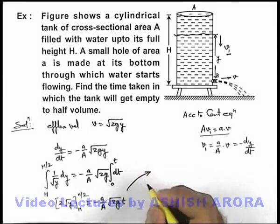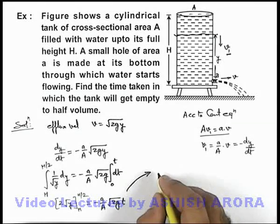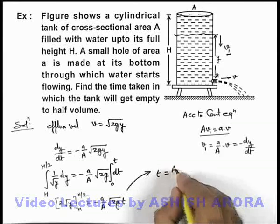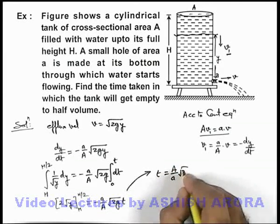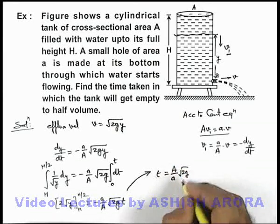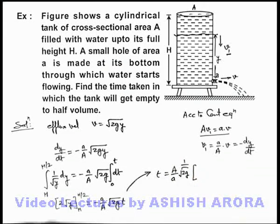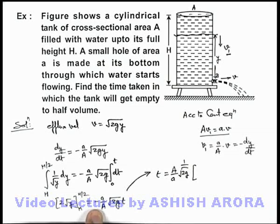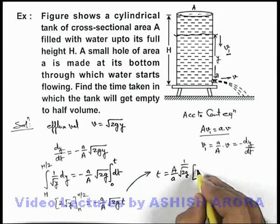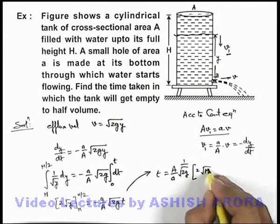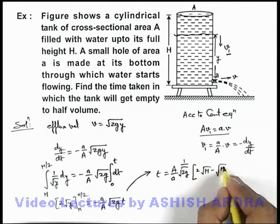From here we can directly get the value of time as t equals (A/a)√(1/2g). This can be taken in denominator multiplied by, if we substitute the limits and adjust this negative sign, then we are having twice of [√H - √(H/2)].